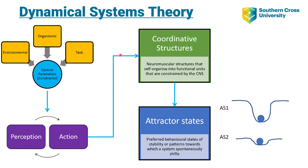We then need to functionally constrain the central nervous system, and in particular the neuromuscular system, to create or play out an attractor state — our preferred behavioural state. Over time, if it is a very preferred and efficient movement pattern, that attractor state deepens. We further develop the neuromuscular coordinative structures that constrain the action, and we get better at perceiving and deciding on actions based on the constraints of the dynamic environment, organism, and task requirements.